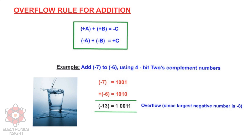Now comes the special rule for addition. If two two's complement numbers both have the same sign — either both positive or both negative — overflow will occur if and only if the result has the opposite sign. Overflow never occurs when adding two operands with different signs. Adding two positive numbers must give a positive result and adding two negative numbers must give a negative result; an opposite sign in the result indicates overflow.